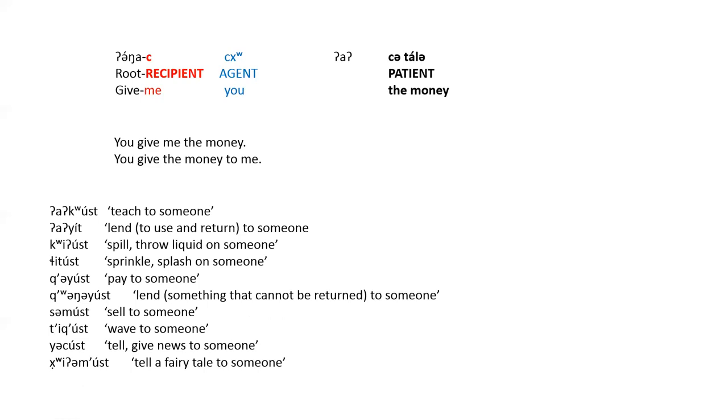In English, the patient — which is 'the money' in this case — either follows the recipient or follows the verb. In Klamath there is no choice: the recipient is always the object of the verb and never the object of the preposition. With recipient verbs like 'give' in Klamath, the patient is always the object of the preposition.